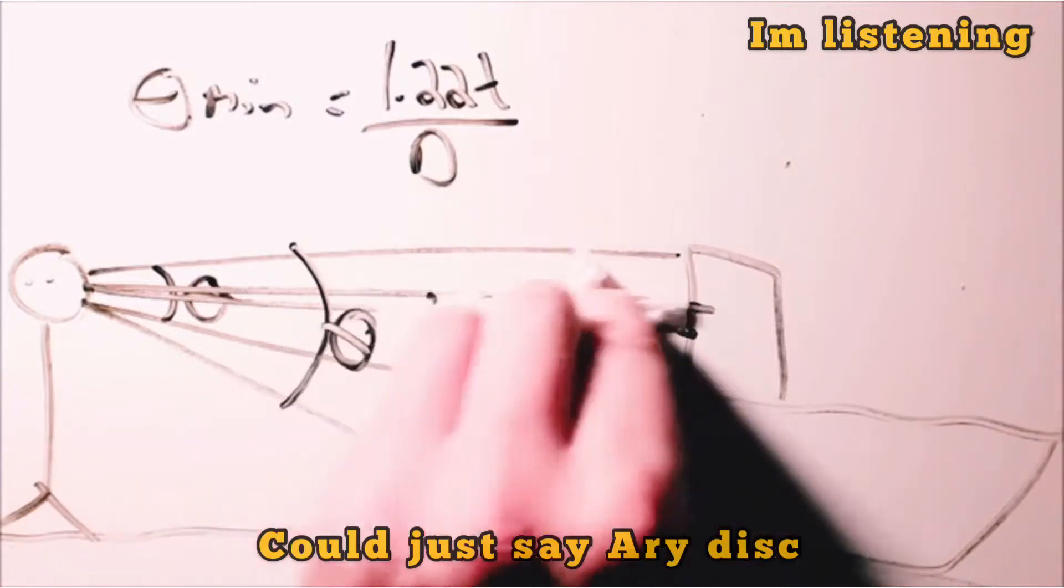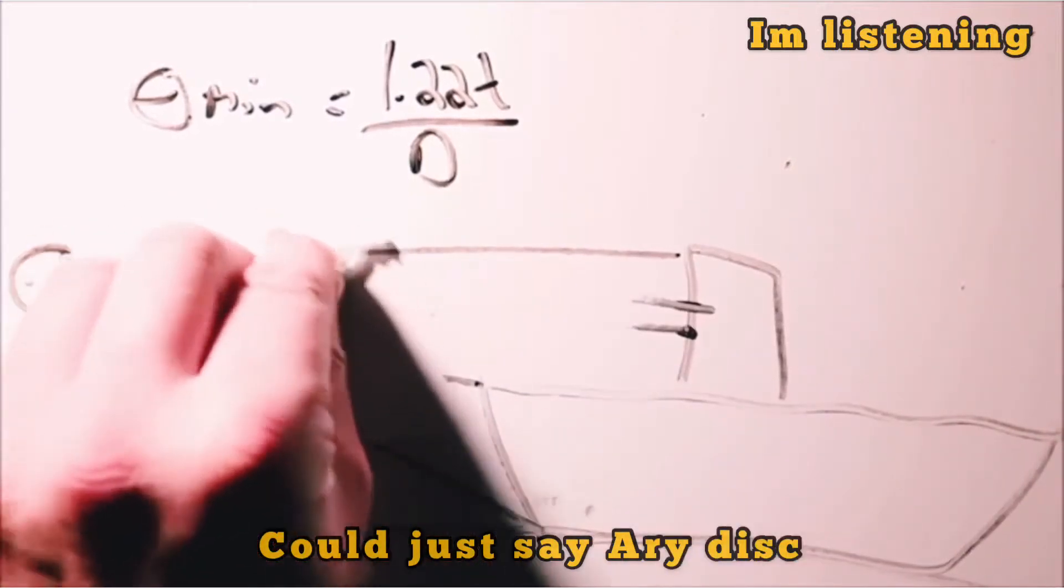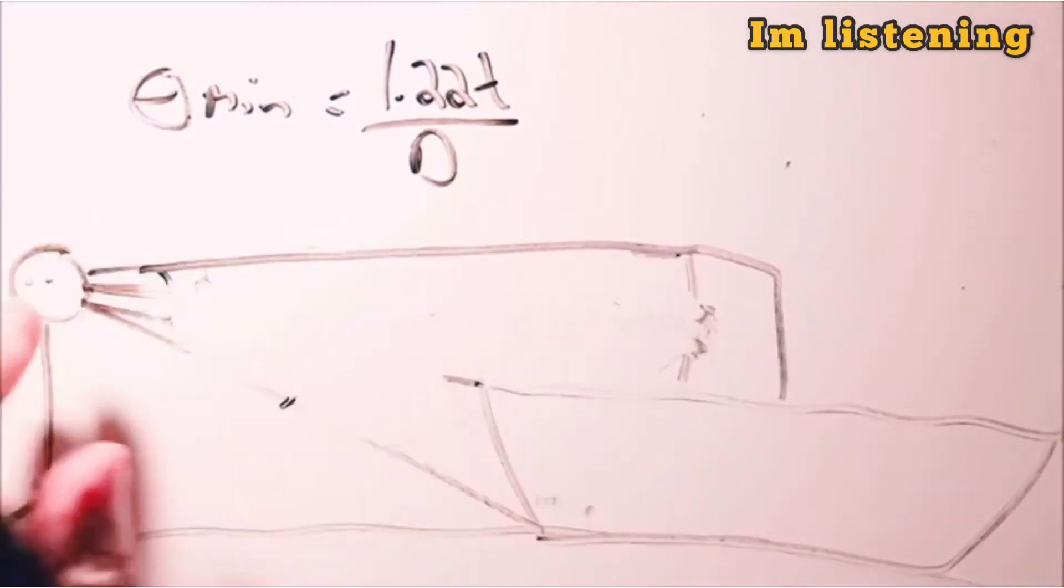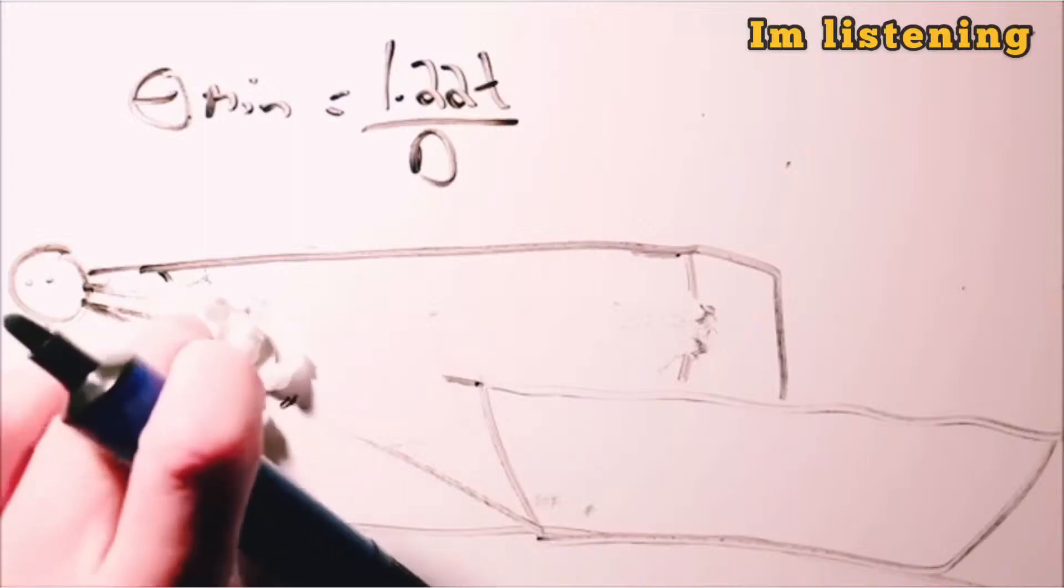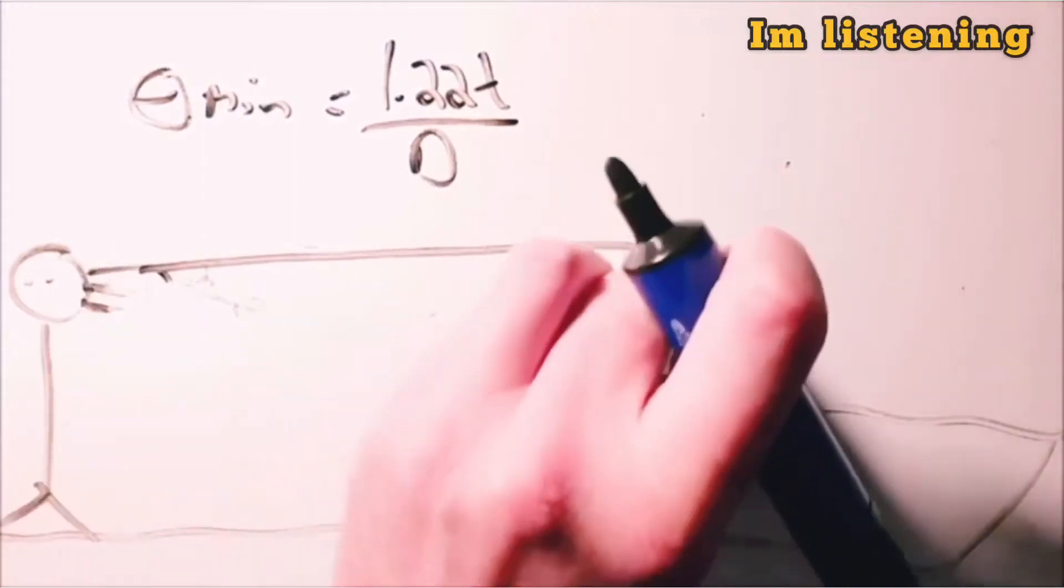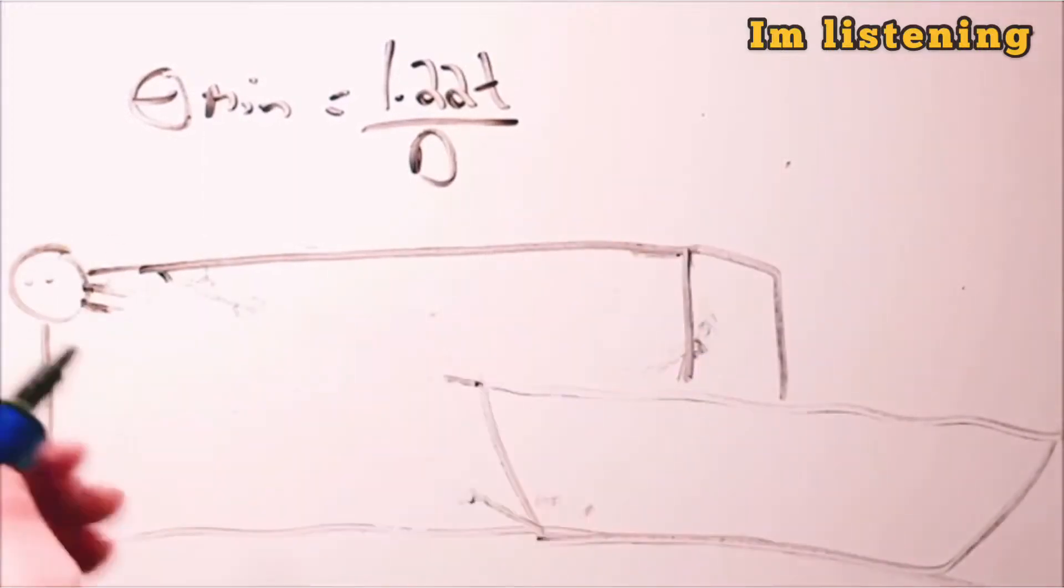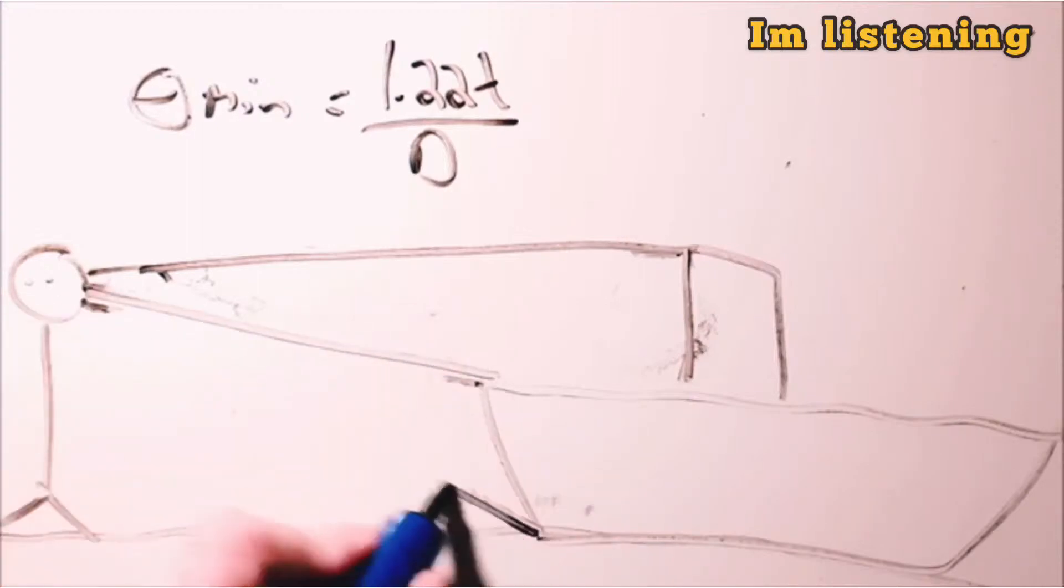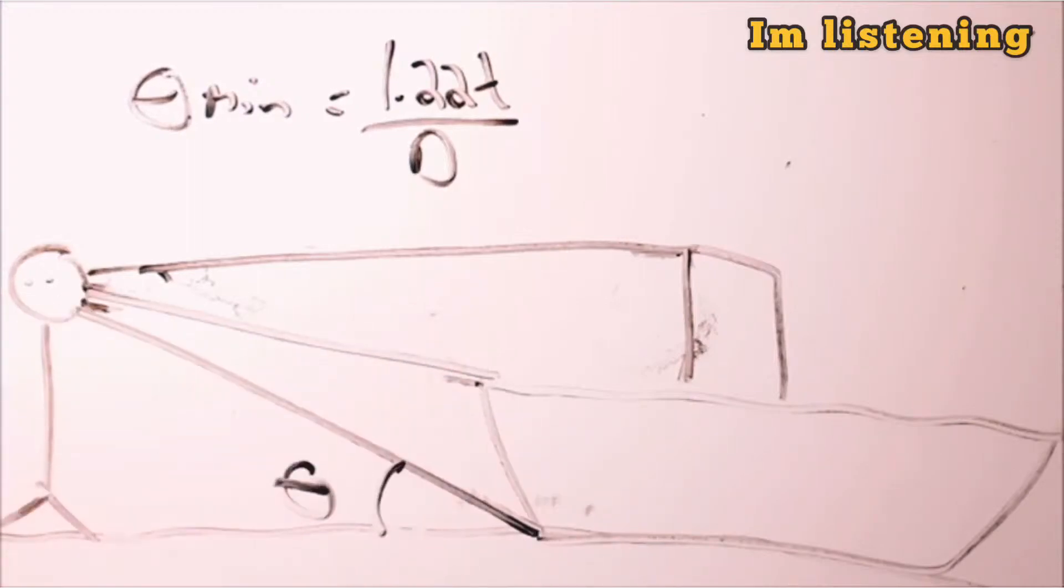But nowhere, absolutely nowhere, does the Rayleigh criterion say it's got anything to do with things disappearing from the bottom. The only thing I can think that they are talking about when they're talking about this limited angle is they are talking about this angle here. So let's get rid of these lines at the top.